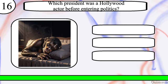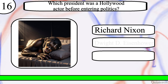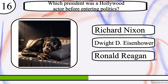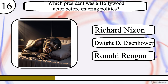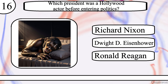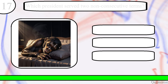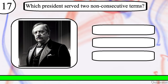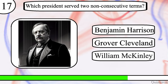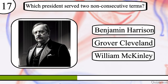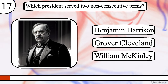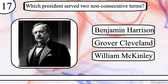Question 16. Which President was a Hollywood actor before entering politics? Richard Nixon, Dwight D. Eisenhower or Ronald Reagan? The correct answer is Ronald Reagan. Question 17. Which President served two non-consecutive terms? Benjamin Harrison, Grover Cleveland or William McKinley? The correct answer is Grover Cleveland.